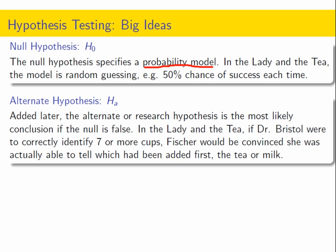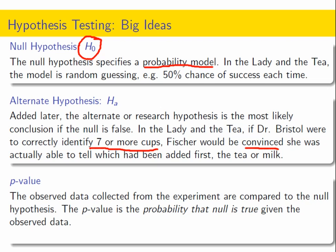The idea of an alternative hypothesis — usually stating what's probably true if we do nullify the null hypothesis — was also added later. In our lady tasting tea example, if Dr. Bristol was able to identify seven or more cups correctly, that would mean the probability that the null hypothesis was actually true would be really, really low. If the probability of truth is low, we have evidence that it's false, and then Fisher would be convinced she was actually able to tell which had been added first — the tea or the milk.